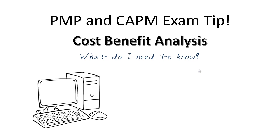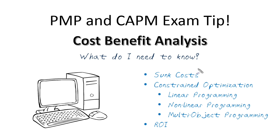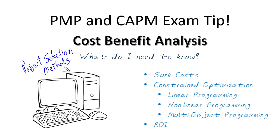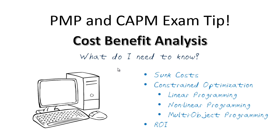The first thing to think about when it comes to cost-benefit analysis is that they're primarily going to be asking you about project selection methods. You will also see it a little bit in earned value. Now let's take a look at some of these terms so you can recognize them. Some of these are just accounting terms, especially something like sunk costs.